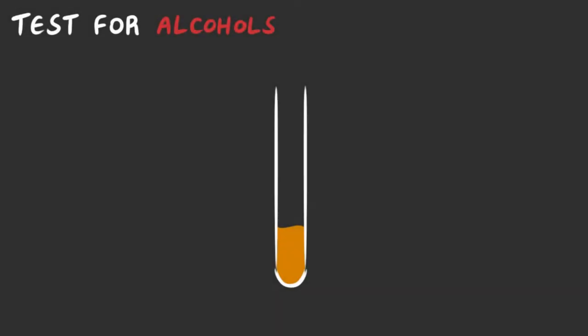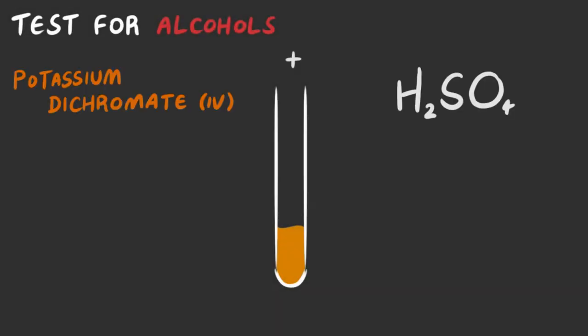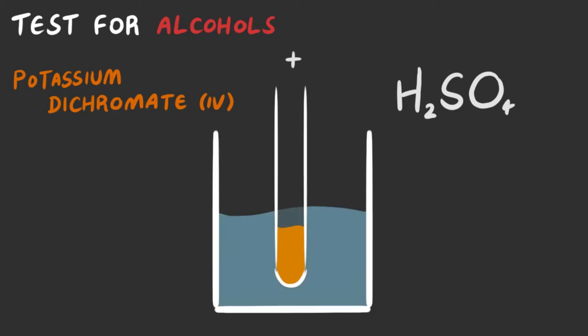To test for alcohols, you must add potassium dichromate and dilute sulfuric acid into a test tube. Add your unknown organic compound and heat in a water bath for a few minutes, and if the compound contains an alcohol, you should observe a color change from orange to green.